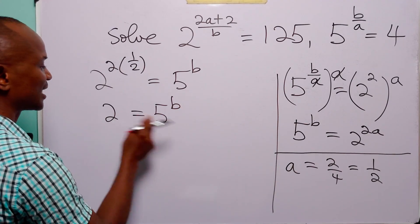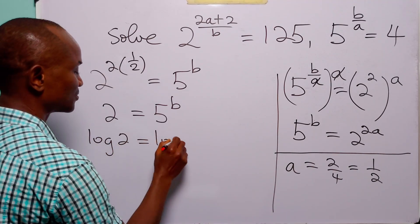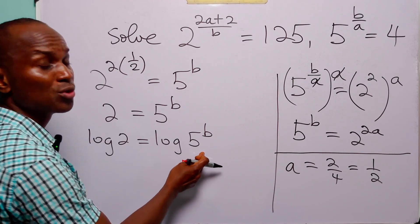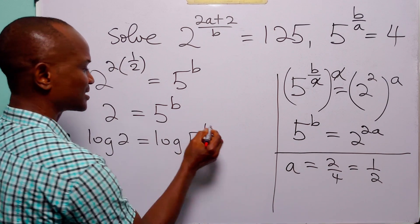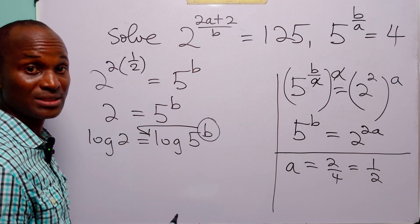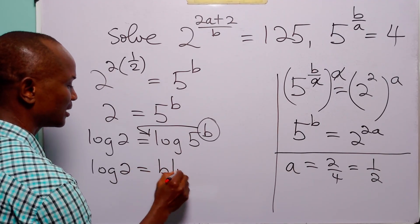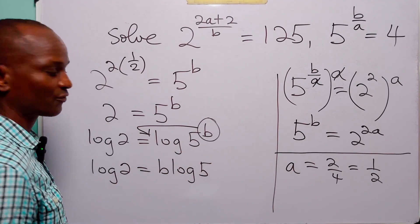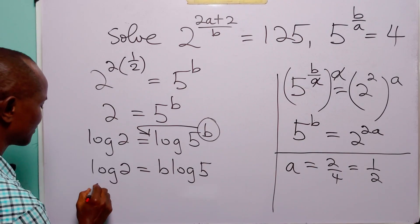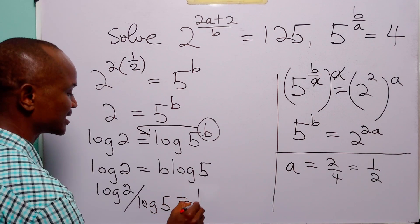To find the value of B, we take the log of both sides: log 2 equals log(5 to the power B). Applying the power rule of logarithms, we bring down the exponent B to the front as a multiplier, giving log 2 equals B times log 5. Dividing both sides by log 5, we have B equals log 2 over log 5.